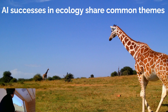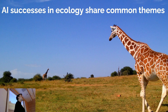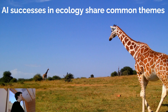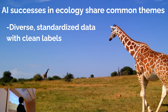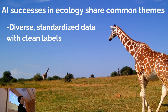AI has started to be successful in ecology in many different ways. What I consider successful AI systems in ecology tend to share a few common themes. One is that they're trained on diverse and standardized data with clean labels. Actually, one of the best ways to improve your machine learning model is either to diversify your data or to go in and clean up incorrect labels — because if you're training a model from data that's labeled in a confusing way, you're forcing the model to draw classification boundaries that don't make any sense.